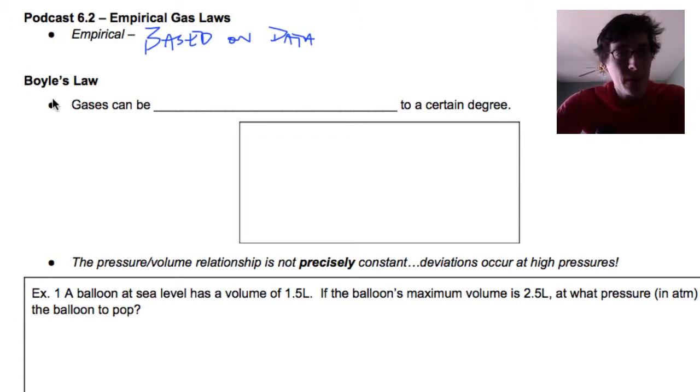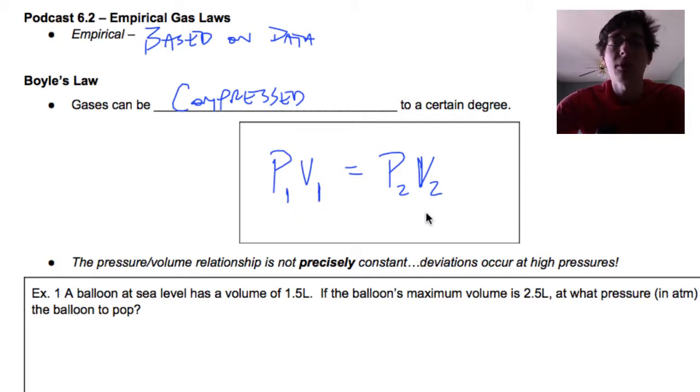We're going to start with this guy named Boyle. His law says that gases can be compressed to a certain degree. You know that if you take an empty water bottle that's actually filled with gas and you try and squish it, you can do it much more than you can squeeze water. His relationship is between pressure and volume. So the way we're going to use this is P1V1 equals P2V2. The initial pressure of a gas is relational to its volume and that relationship is the same for a different pressure and volume. It never changes.